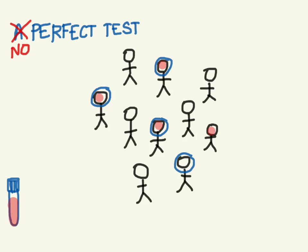We will use the calculations of sensitivity and specificity to describe the accuracy of a test. There are really four scenarios we need to go over. First, this person has the disease and the test was positive — so the test was positive and they truly had the disease: that's a true positive. This person over here doesn't have the disease and the test was negative — that's a true negative. These are the instances when the test is performing well: our true positives and our true negatives.